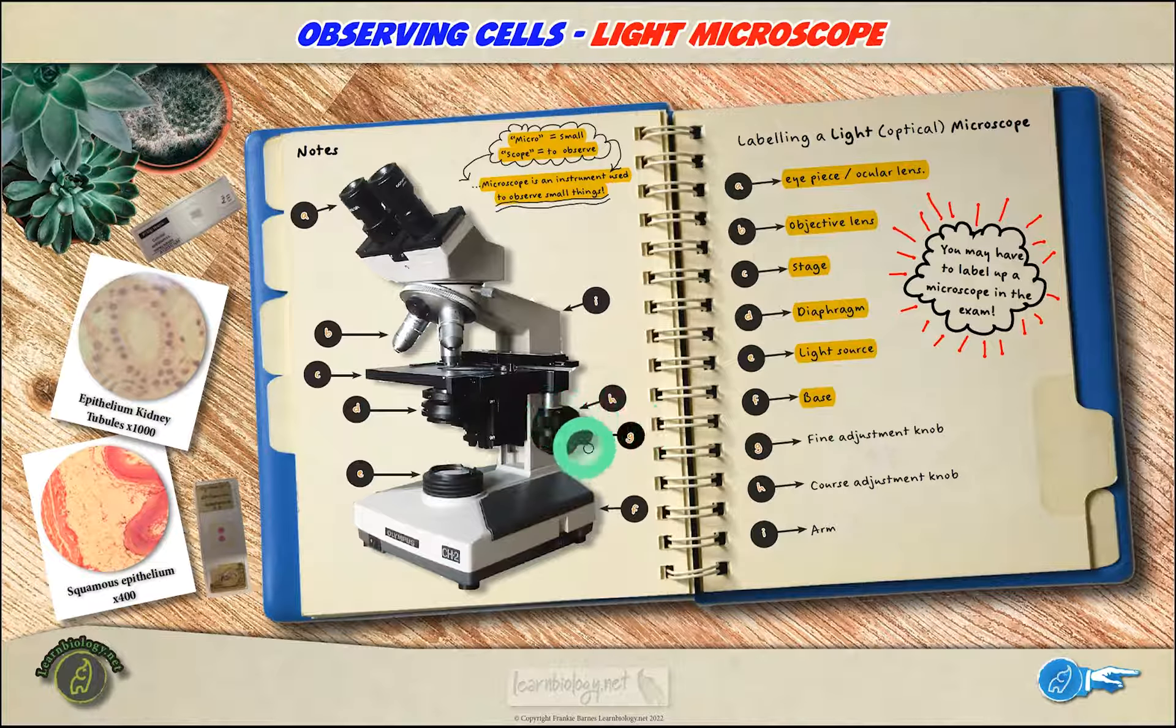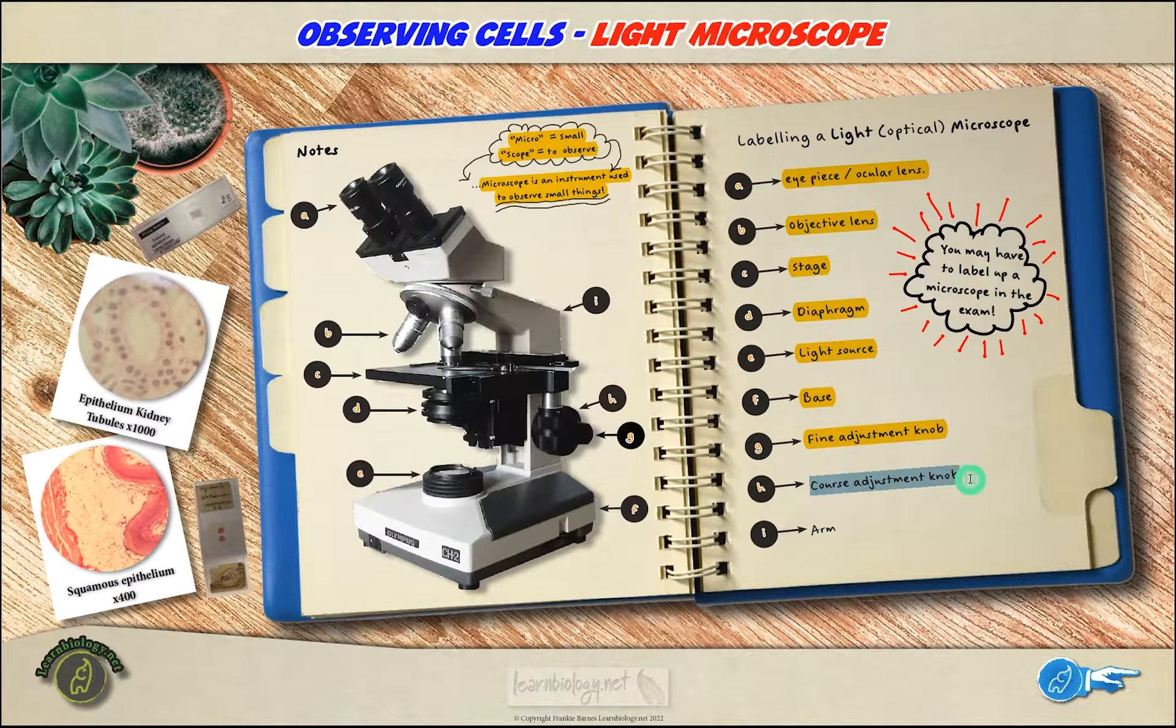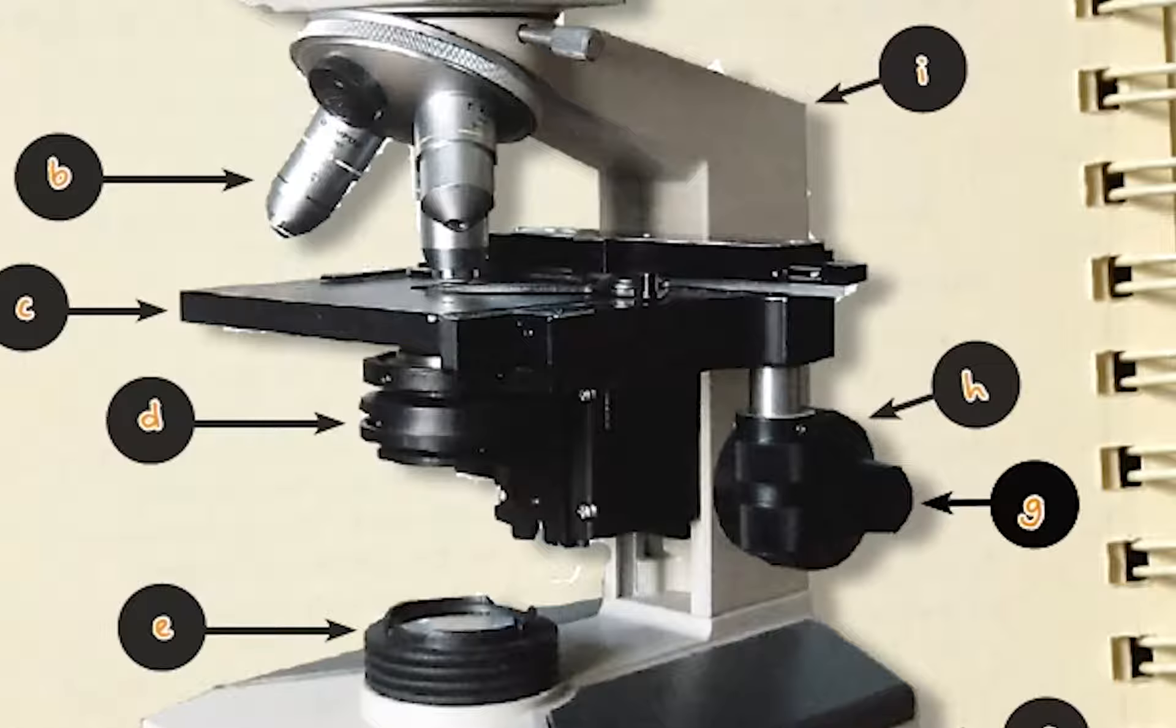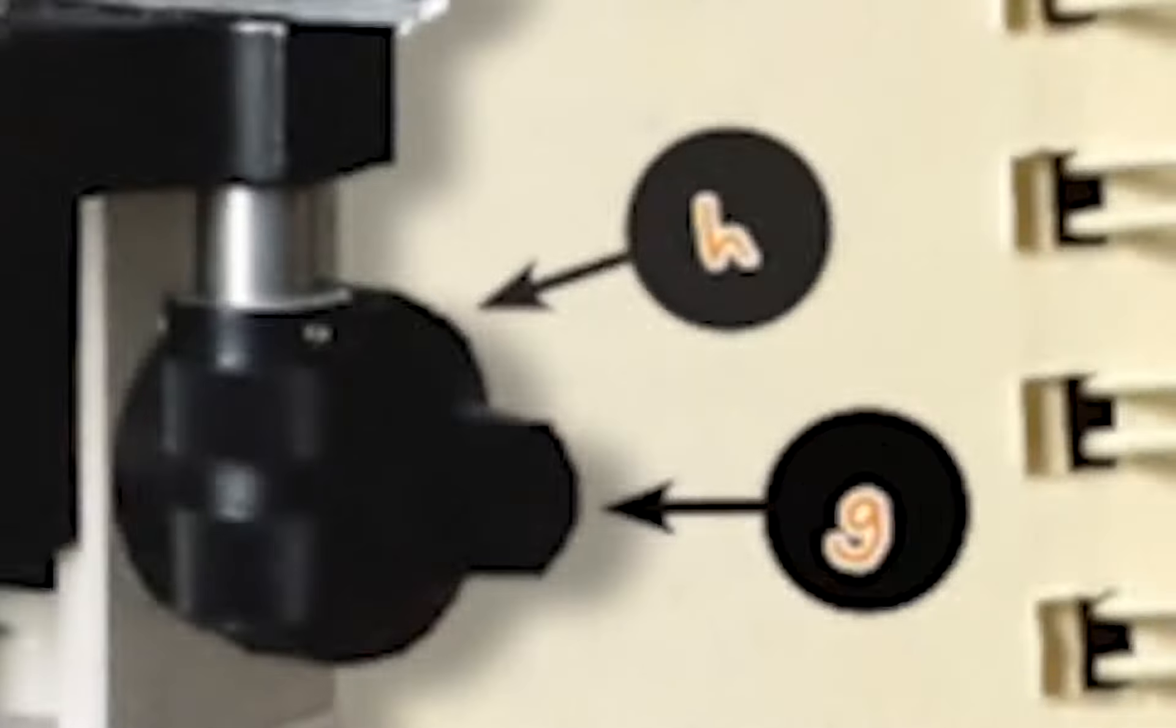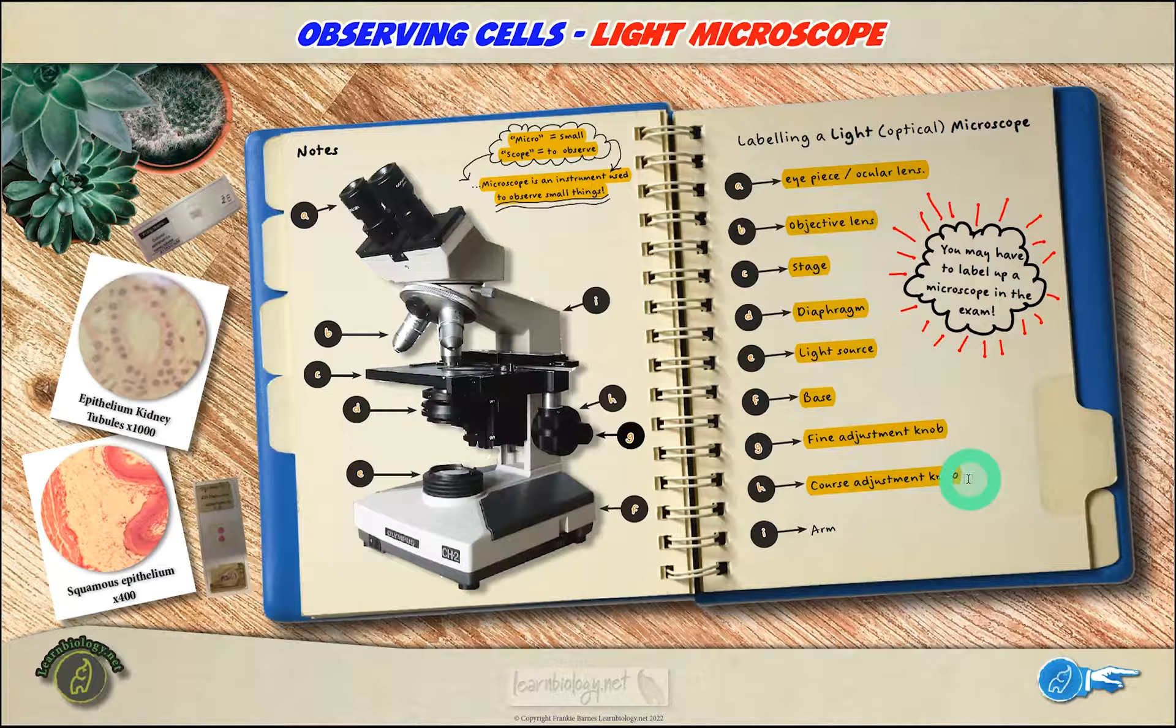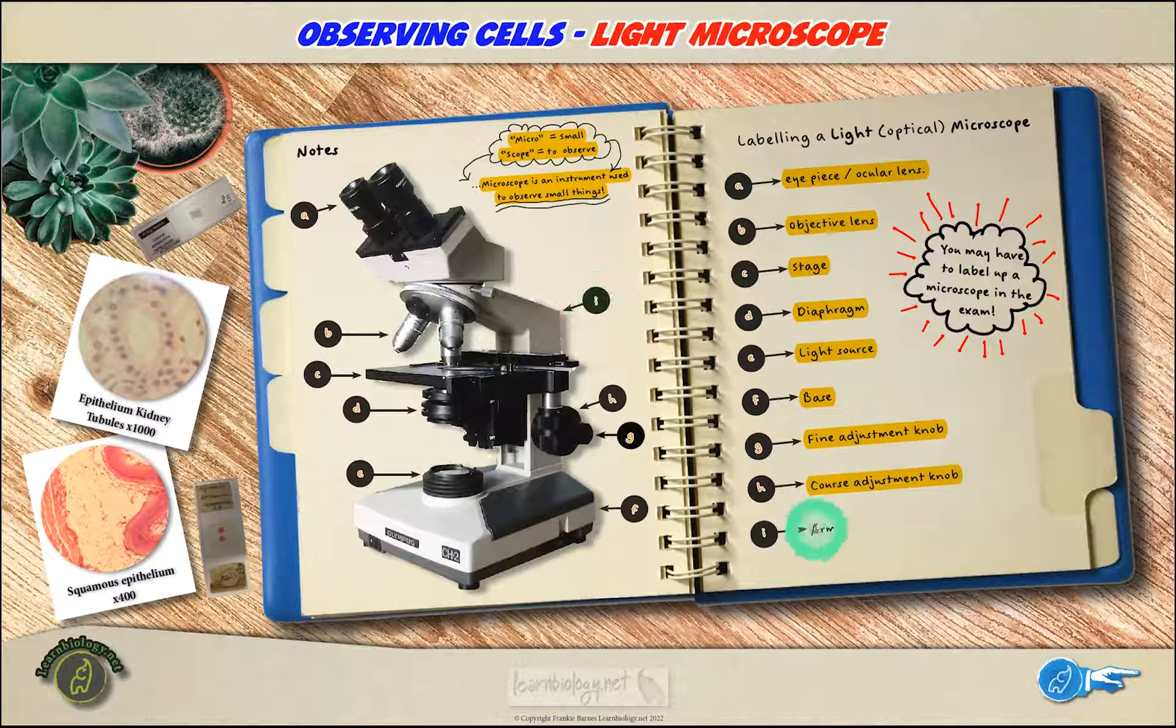At G and H we have the coarse and the fine adjustment knobs. These dials you're going to move in order to bring your sample into focus. The larger dial, the coarse adjustment knob, is useful at lower magnifications to bring the sample into focus, whilst the inner dial, the fine adjustment knob, is used at very high magnifications to fine-tune the focus. And finally at I we have the arm of the microscope, which is used to pick up the microscope so you can move it from one place to another.